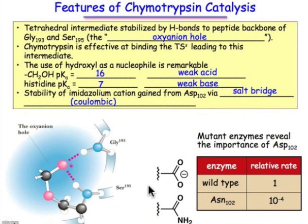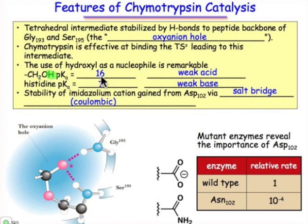To summarize some key things: there's the oxyanion hole that stabilizes the intermediate. Chymotrypsin is very effective at stabilizing the transition state. Even though it's the deprotonation of the serine hydroxyl group — with a pKa of that oxygen-hydrogen of 16 — that functions as the nucleophile, and it's being deprotonated by histidine, which is quite a weak base to deprotonate such a weak acid, it's stabilized by the aspartate 102 group, which modulates the pKa and makes the imidazole ring of histidine a stronger base.